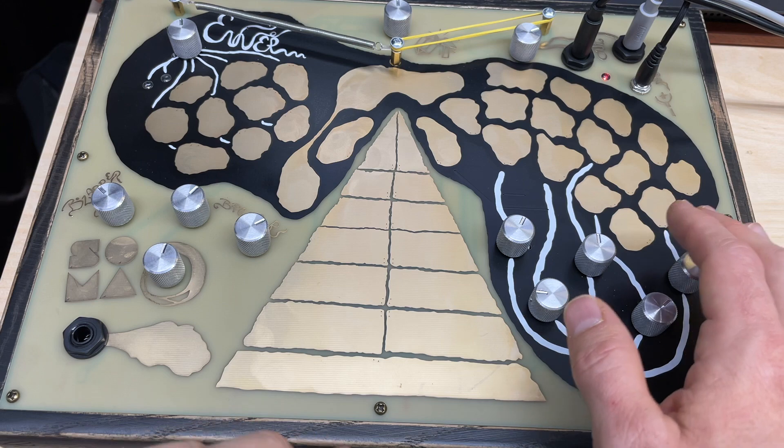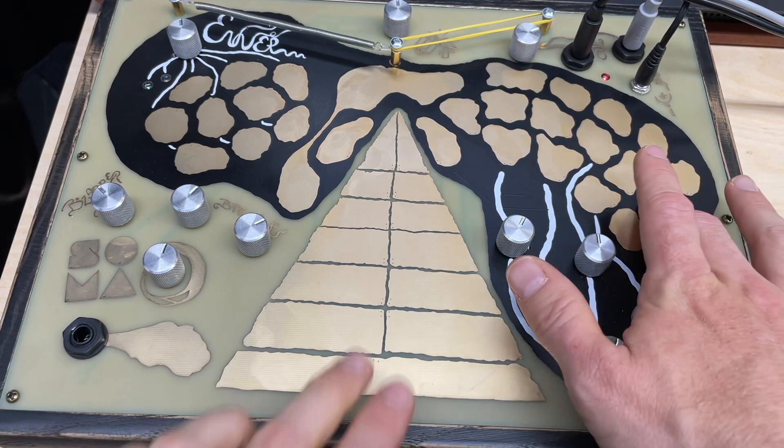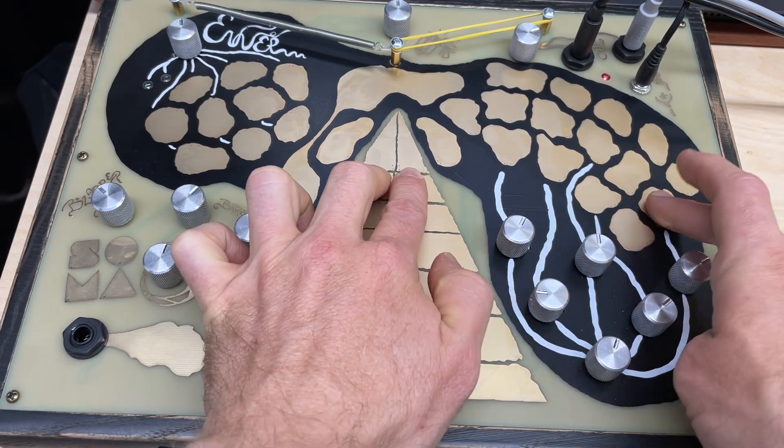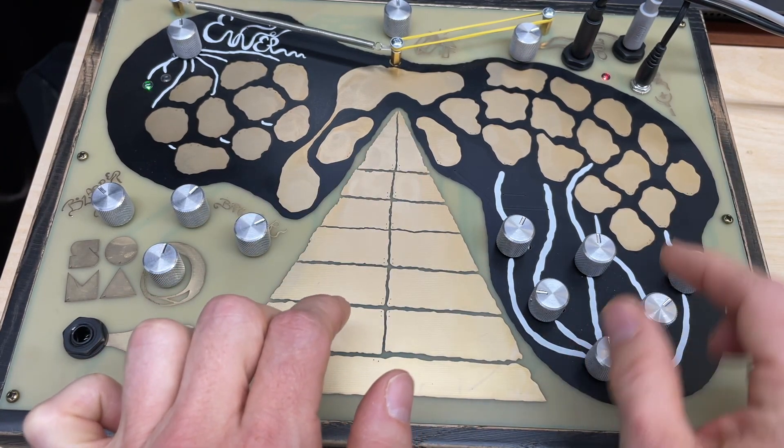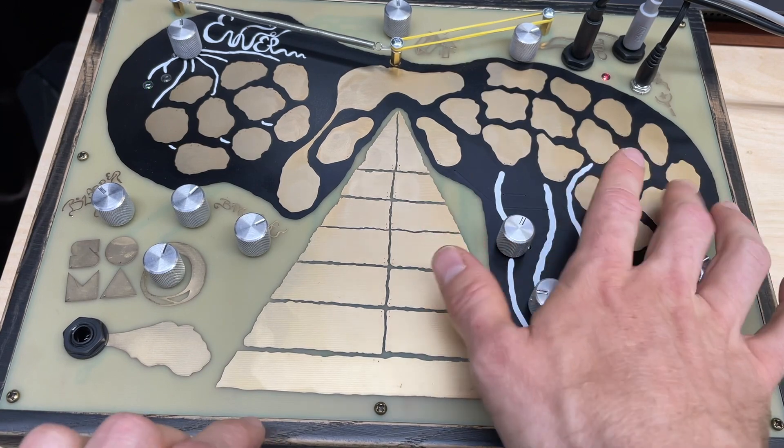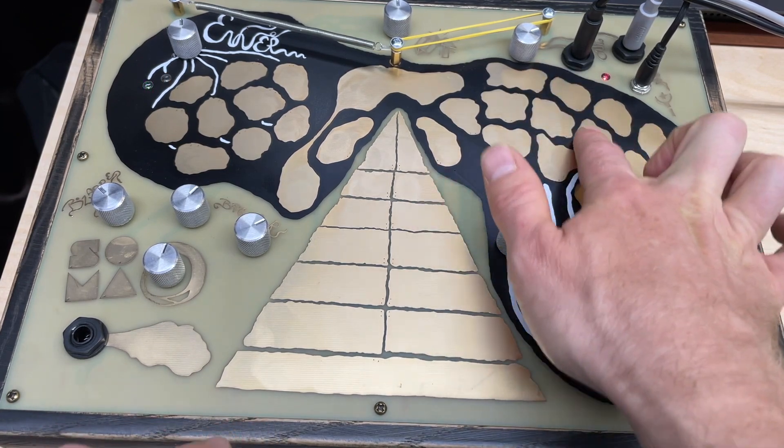Right side of the synth is more FM-based, more tone. We've got a master tune down here at the bottom, so this changes all five oscillators. You've got five oscillators here. One, two, three, four, five.